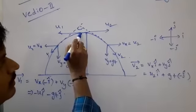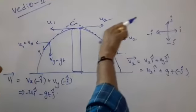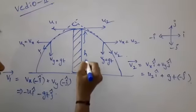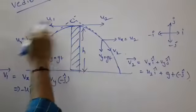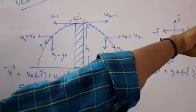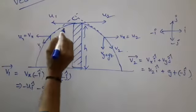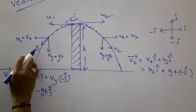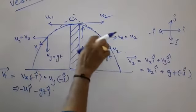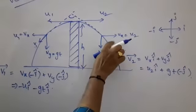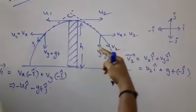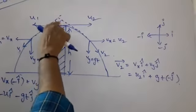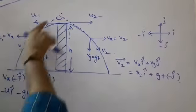Two bodies are projected horizontally in opposite directions from a tower of height H. We need to find the time after which the velocity vectors are mutually perpendicular. V1 is the velocity of the first body after time T, and V2 is the final velocity of the second one. When their velocity vectors are extended, they intersect at a point and we measure when the angle between them is 90 degrees.